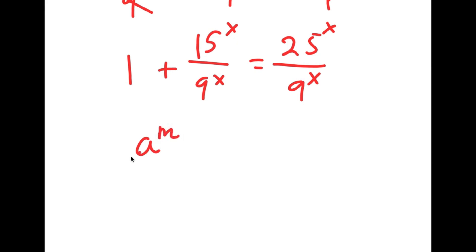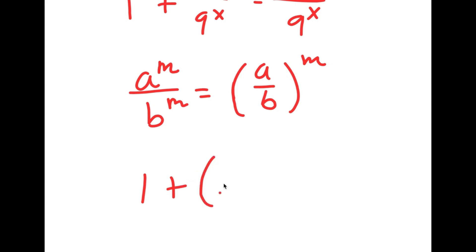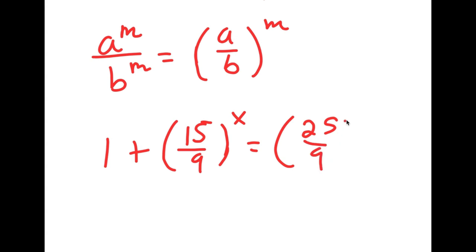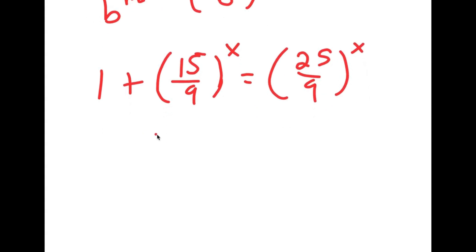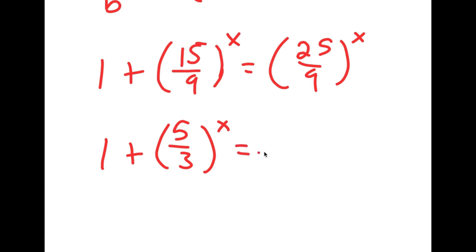If I have something in the form a^m over b^m, this is the same thing as (a/b)^m. So 15^x over 9^x equals (15/9)^x, and 25^x over 9^x equals (25/9)^x. Now 15/9 simplifies to 5/3, and 25/9 simplifies to 5² over 3².